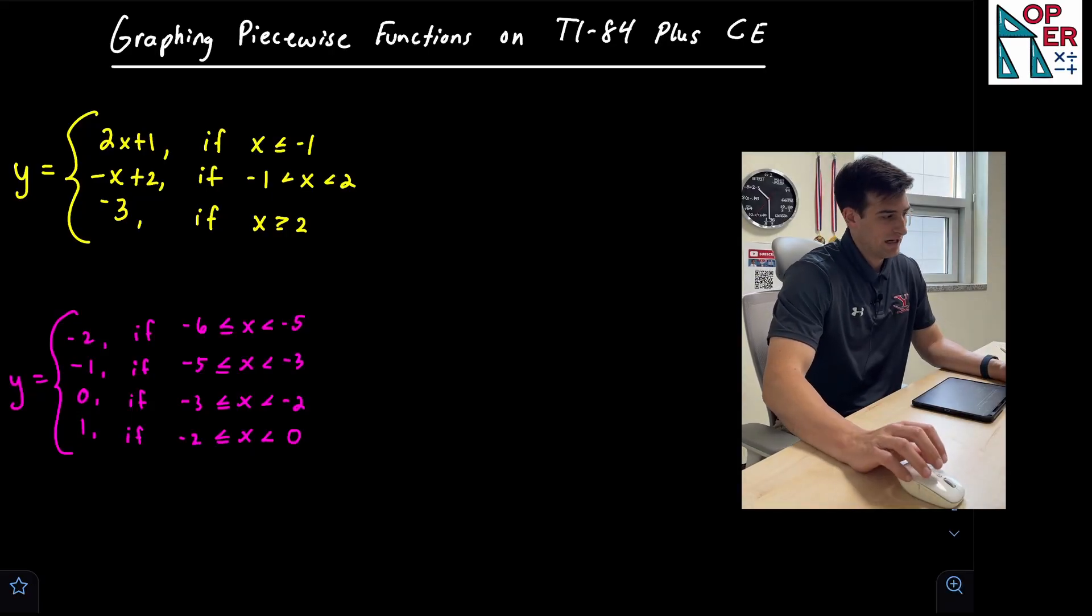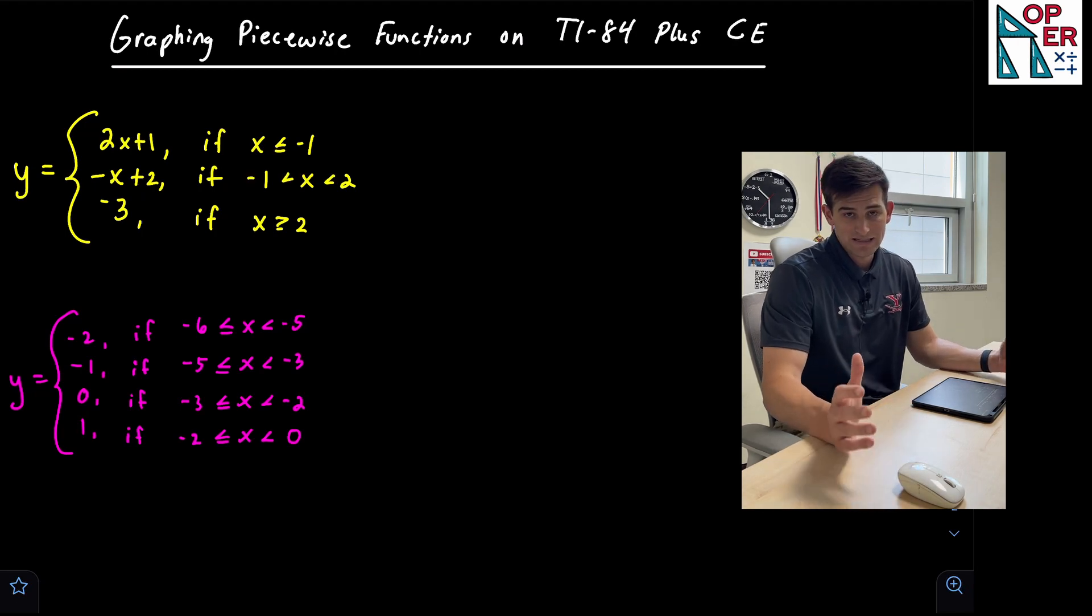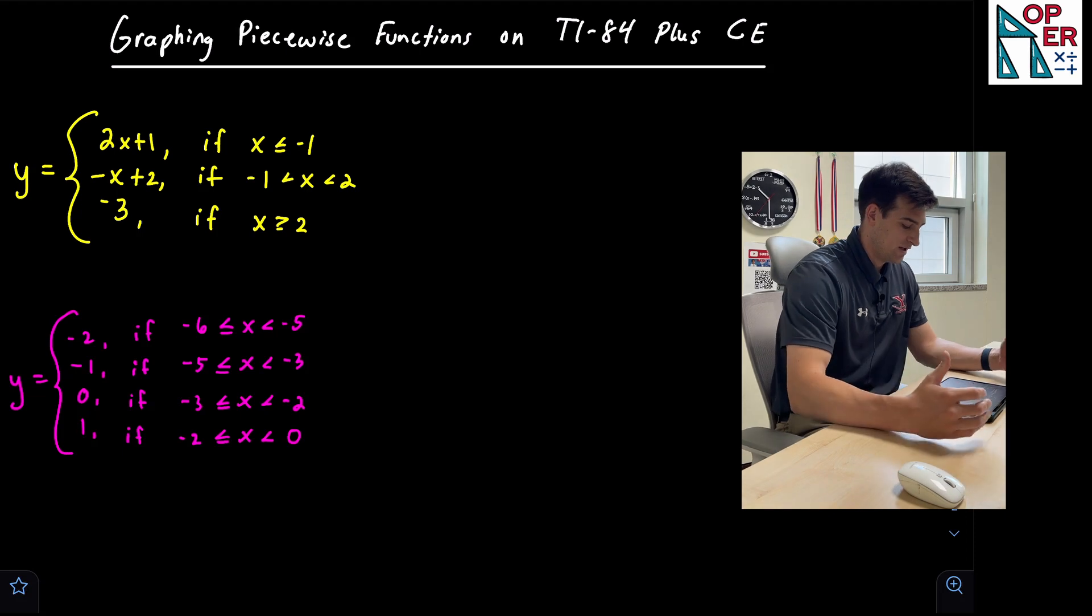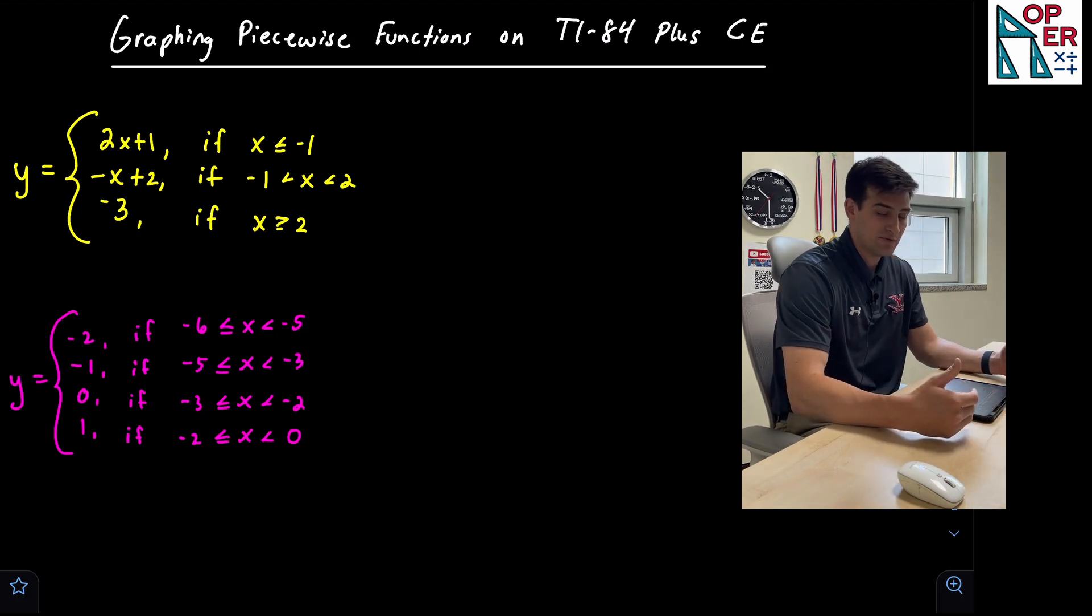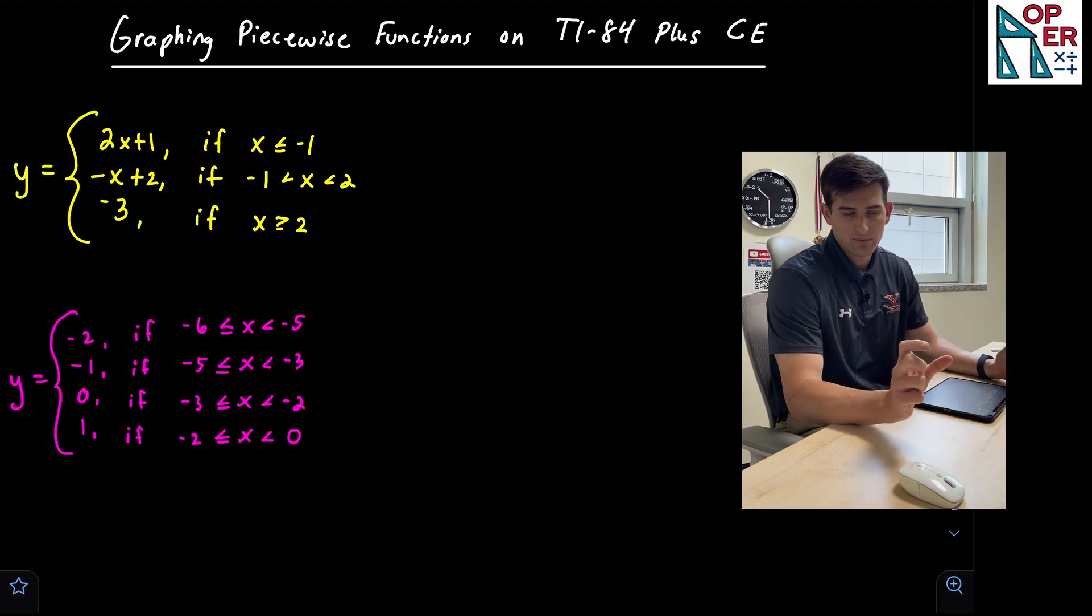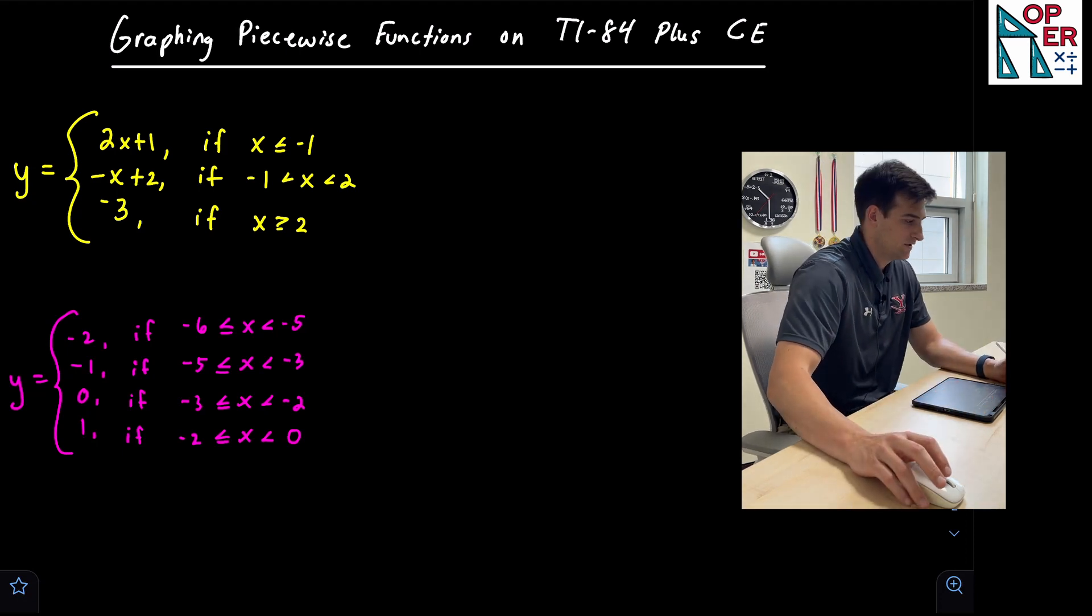Hello, everyone. Today, in this video, we're gonna talk about how we can graph piecewise functions on the TI-84 Plus CE graphing calculator. So on the screen, we have a piecewise function in yellow and we have a piecewise function in pink. The one in pink is actually a more specific type of piecewise function. It's called a step function. So we'll graph both of these on the calculator today.